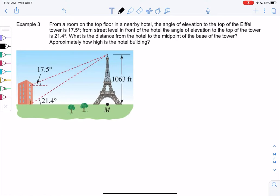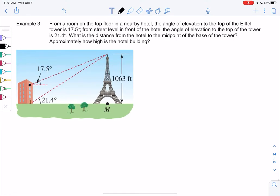We have a room in a hotel. Here's our hotel room. It has an angle of elevation with the Eiffel Tower. We can pretend we're traveling to Paris right now. And we get this angle right here. 17.5 degrees.